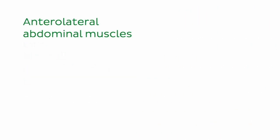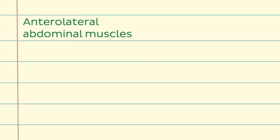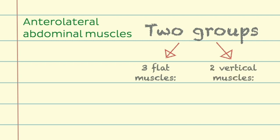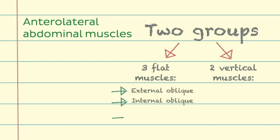Muscles of the anterolateral abdominal wall can be divided into two groups according to their fibre direction. There are three flat muscles and two vertical muscles. The three flat muscles consist of the external oblique, internal oblique, and transversus abdominis muscles.